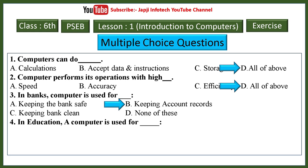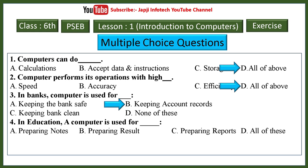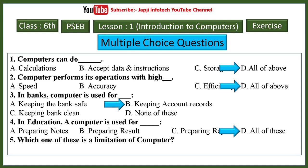The fourth question: in education, a computer is used for dash. Options are preparing notes, preparing results, preparing reports, and all of these. The right answer is all of these. The fifth question: which one of these is a limitation of computer? Options are speed, accuracy, no IQ, and diligence. The right answer is: no IQ is a limitation of computer.